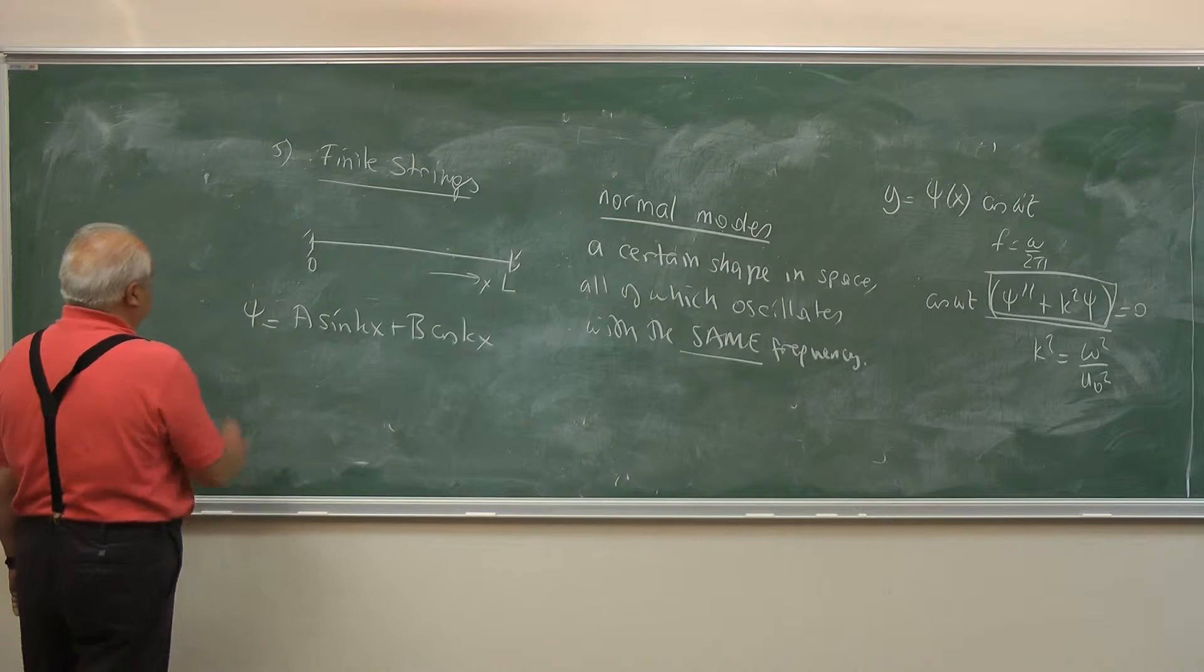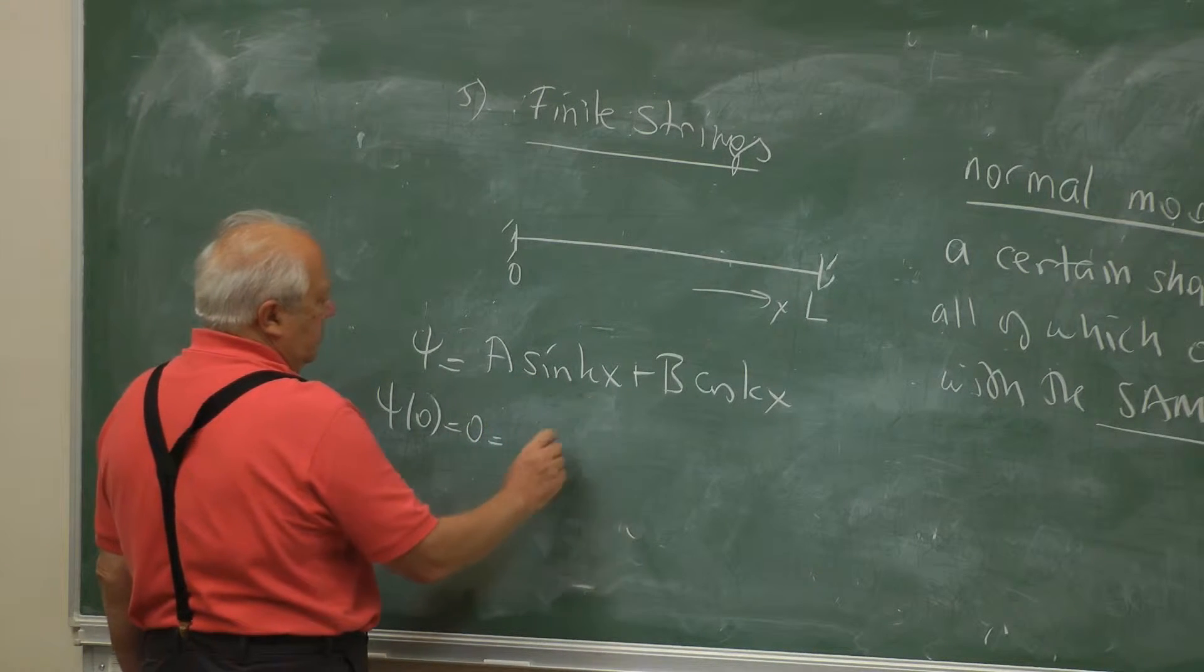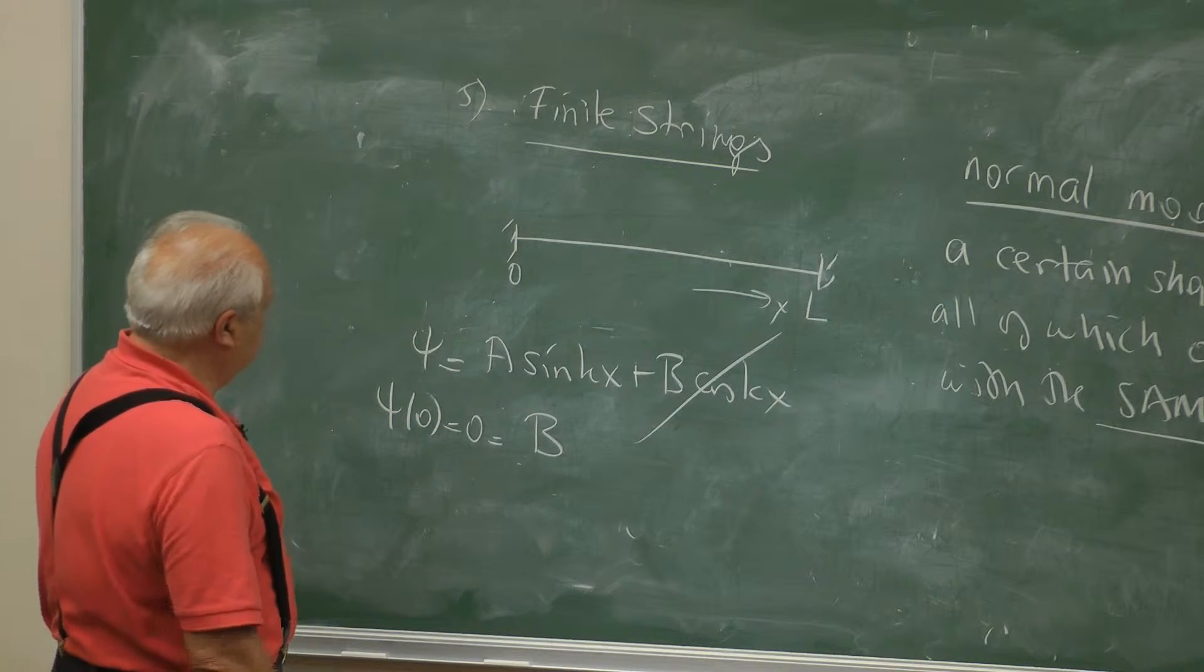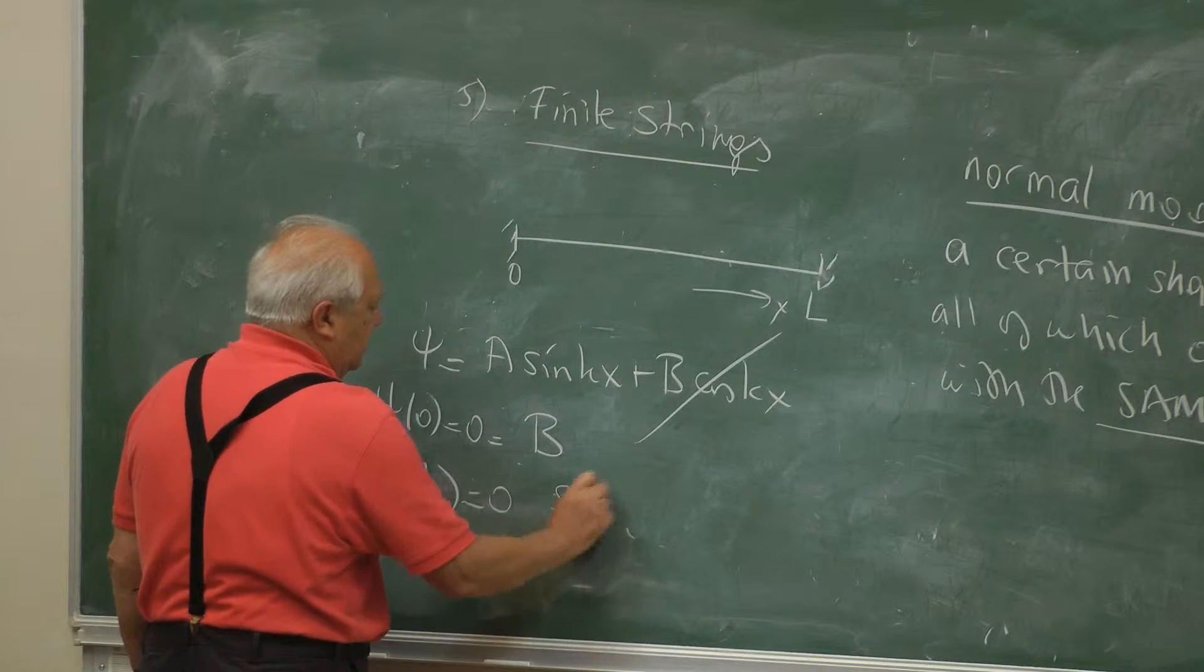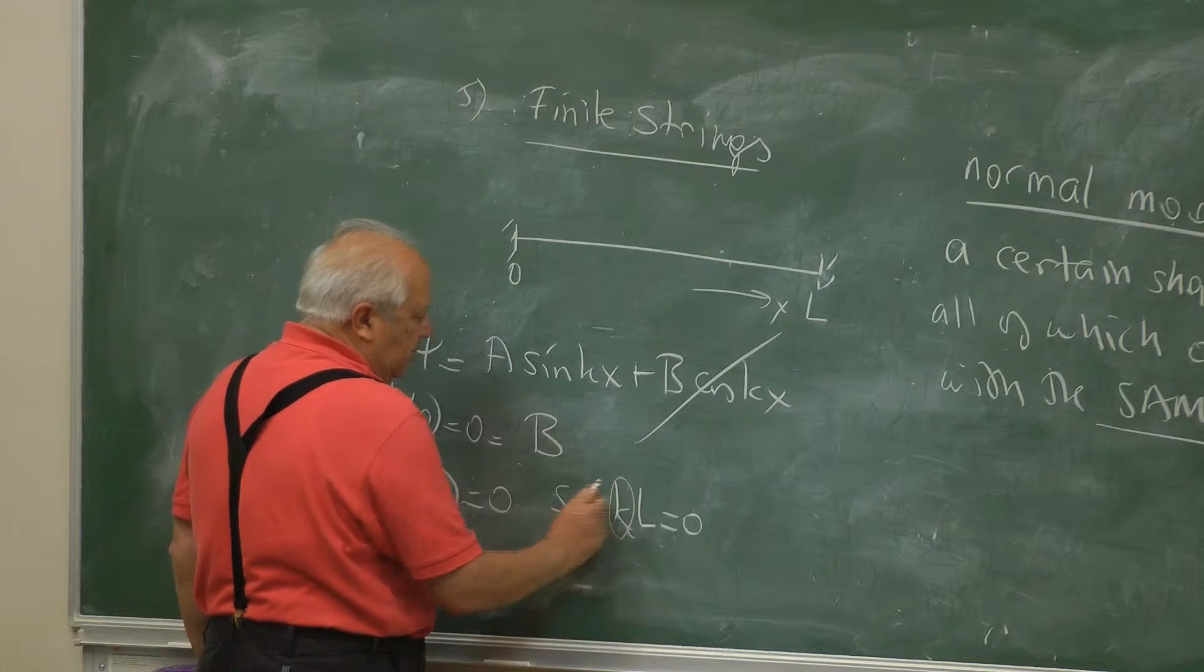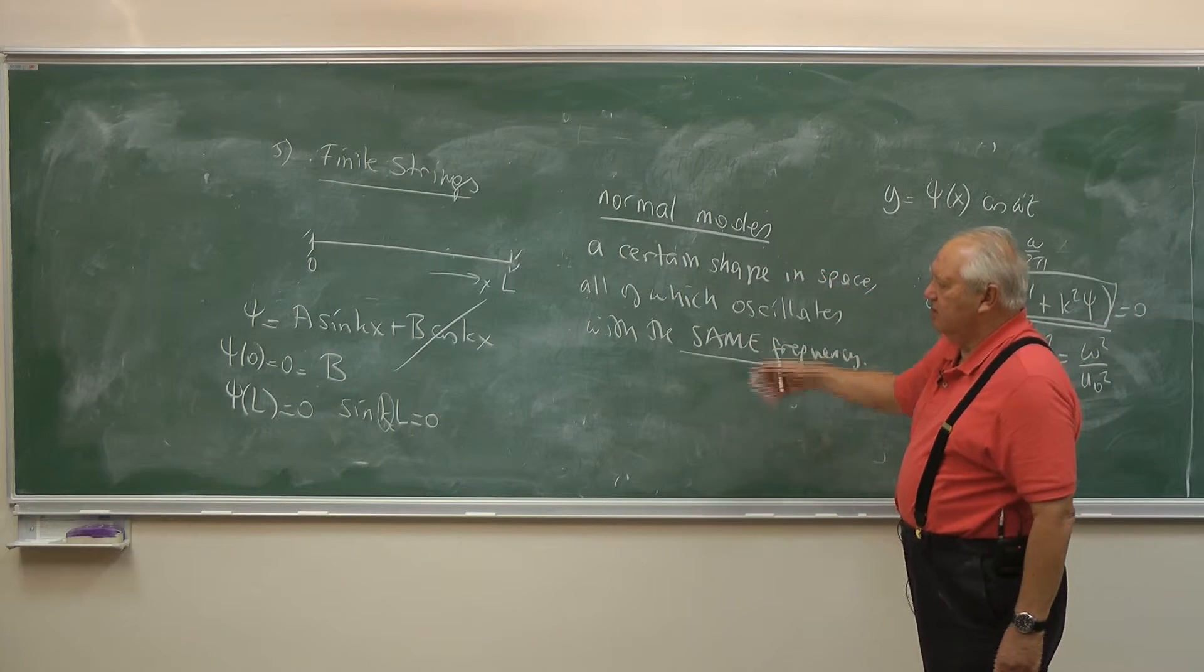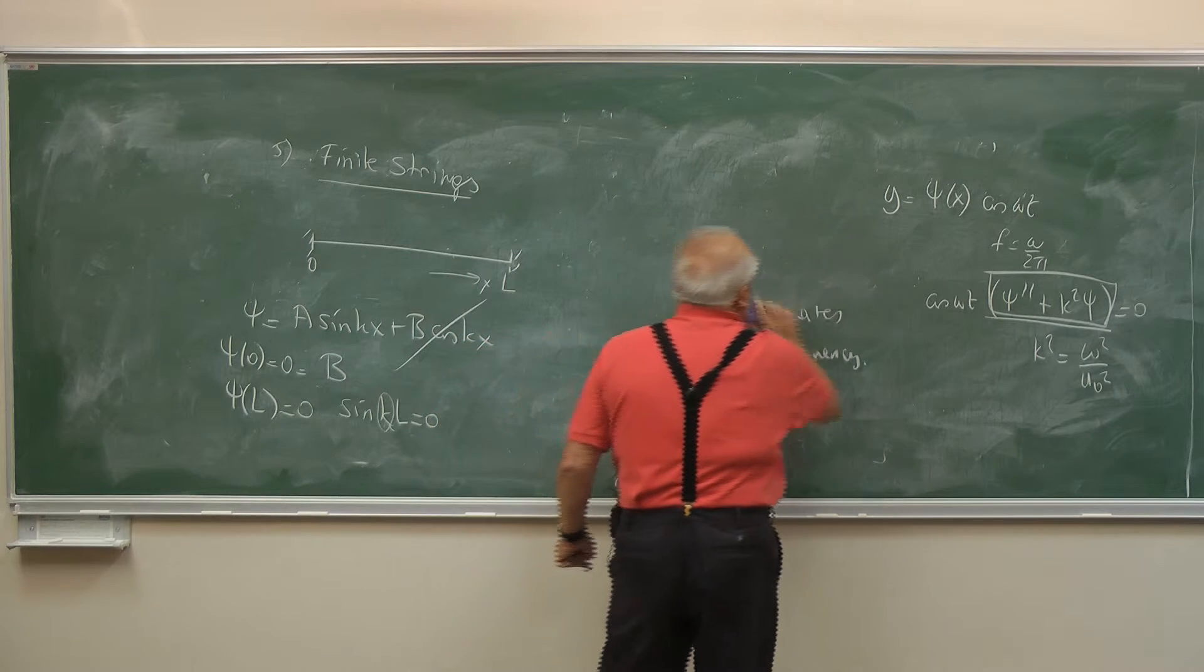Now to satisfy the boundary conditions, ψ(0) must be 0. So A times 0 plus B times 1, so B = 0. Then I have B is gone. I only have A times sin(kx). And ψ(L), because it is tied down, ψ(L) = 0. That means sin(kL) = 0. That means since L is a given length, this k cannot be arbitrary. It is constrained. Notice that k is related to the frequency. So not all frequencies are possible for normal modes. Only certain frequencies are possible. And we will now look for the shapes and the frequencies of these normal modes.